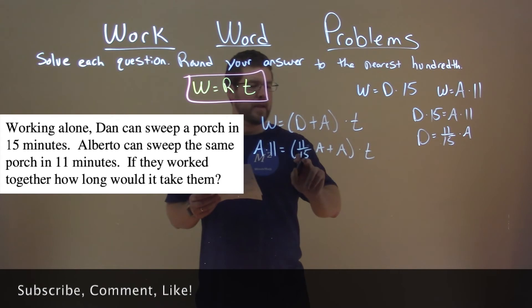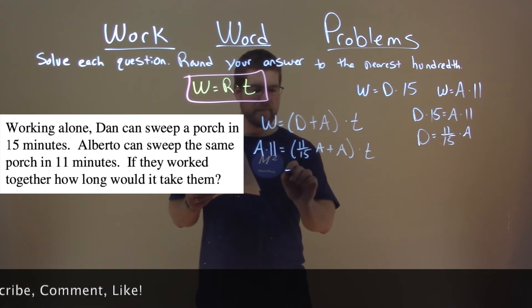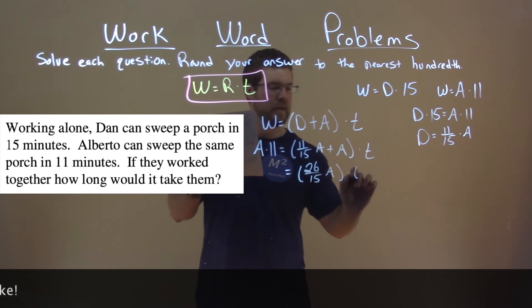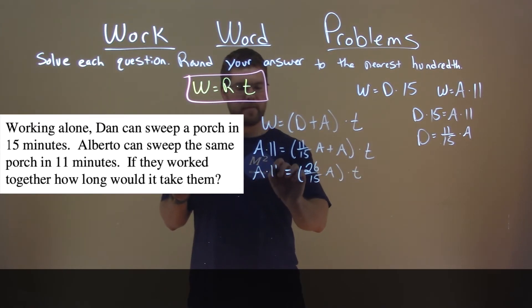Well, let's simplify inside. 11 fifteenths A plus 1 A is equal to 26 fifteenths A times T. And we have A times 11 still here.